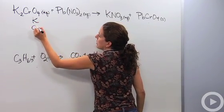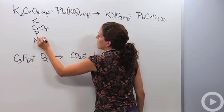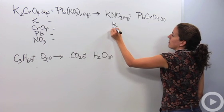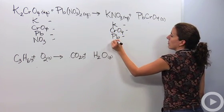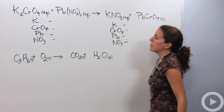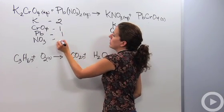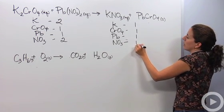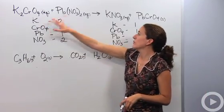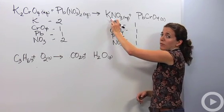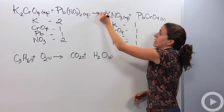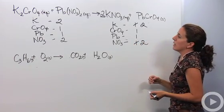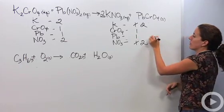So I'll separate everything out: potassium, chromate, lead, and nitrate on both sides. On the reactant side: two potassiums, one chromate, one lead, and two nitrates. On the product side: one potassium, one chromate, one lead, and one nitrate. Potassium has two on the reactant side and one on the product side. I'll put a two in front of the potassium nitrate on the product side — giving two potassiums, but that also changes the nitrates to two. Now everything is balanced — we are good to go.